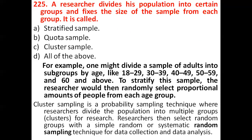The next question: a researcher divides his population into certain groups and fixes the size of the sample from each group — say 100 respondents from each group. This is a non-random sampling technique. For example, one might divide adults into age subgroups like 18–29, 30–39, 40–49, 50–59, and 60 and above. Since the sample size is fixed from each group, this is non-random sampling, making the correct answer quota sampling, option B.